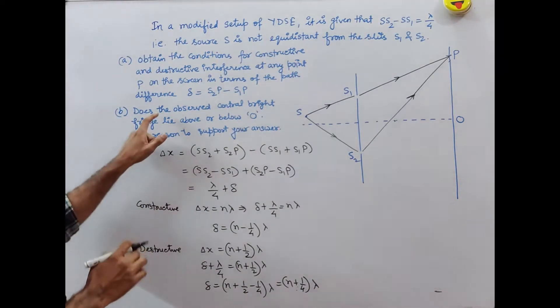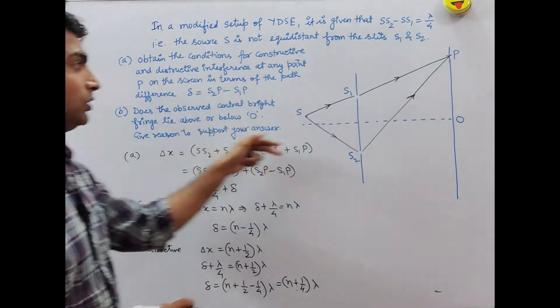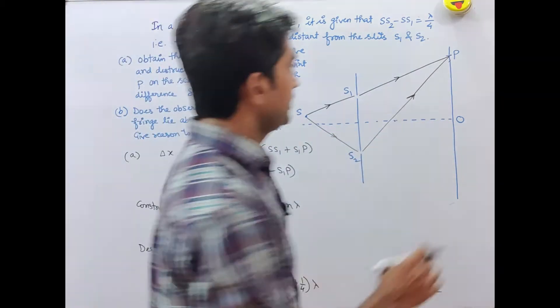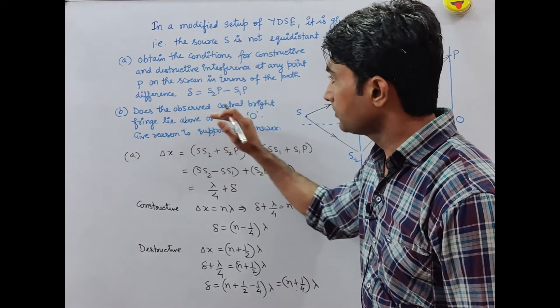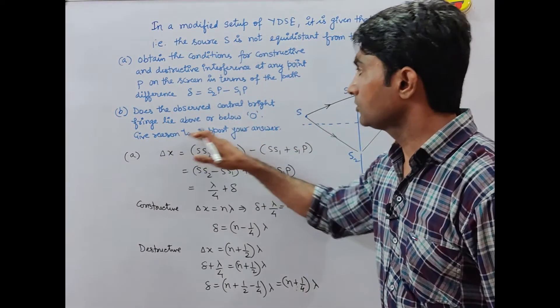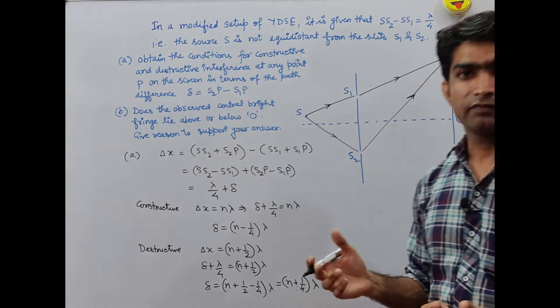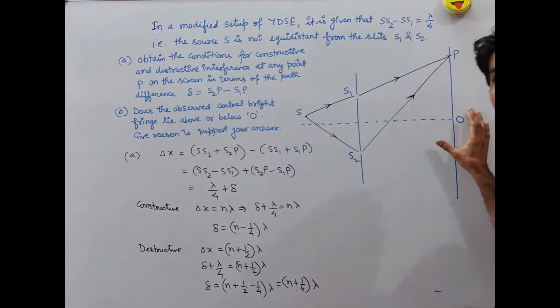Part B asks: Does the observed central bright fringe lie above or below the central line that intersects the screen at point O? You need to support your answer with reasoning. Without reasoning, you could say the central bright fringe occurs where path difference between both light waves is zero.